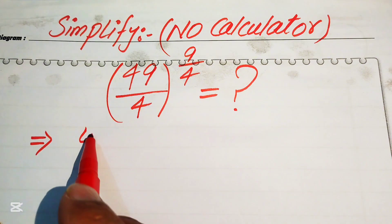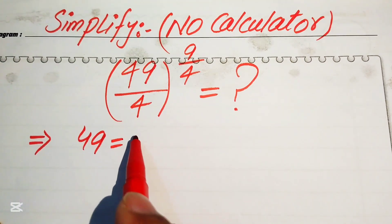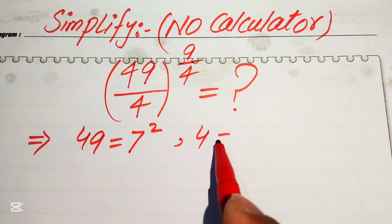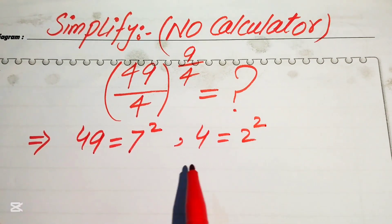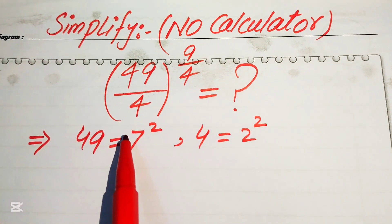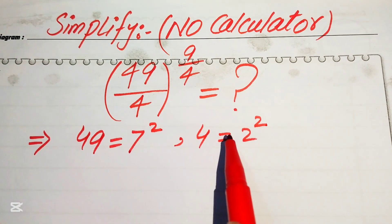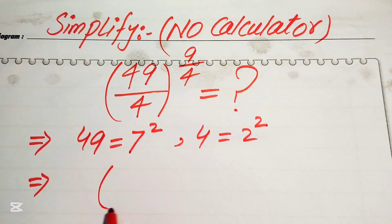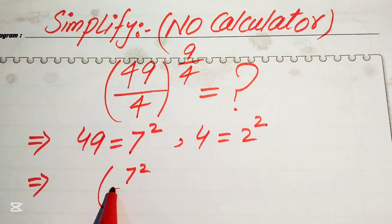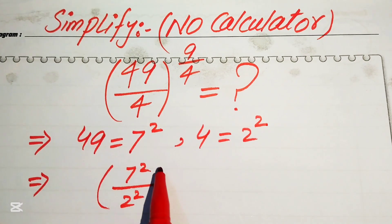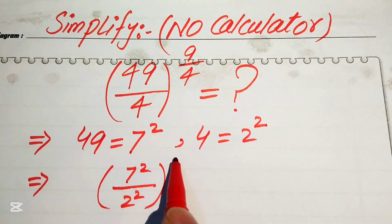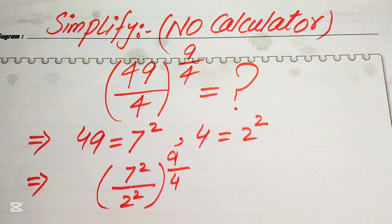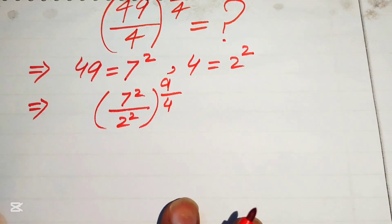We know that 49 equals 7 squared and 4 equals 2 squared. So now we replace 49 with 7 squared and 4 with 2 squared. Our algebraic expression is now written as 7 squared divided by 2 squared, and its exponent is 9 divided by 4.